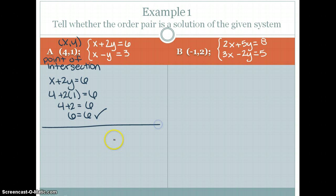And now we must check the second one. So x minus y is equal to 3. So that would be 4 minus 1 is equal to 3. 3 is equal to 3. So the second one checks. So the answer to A would be yes. (4, 1) is the solution to this question.